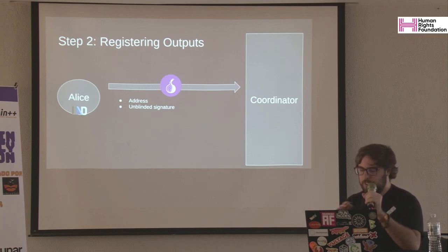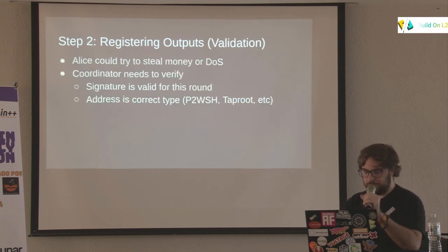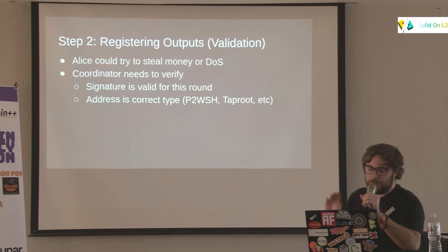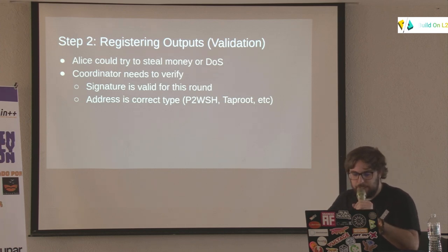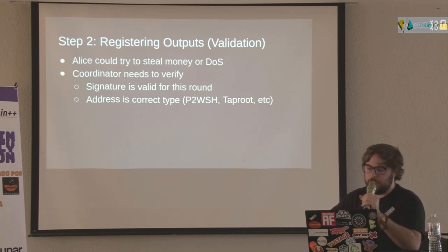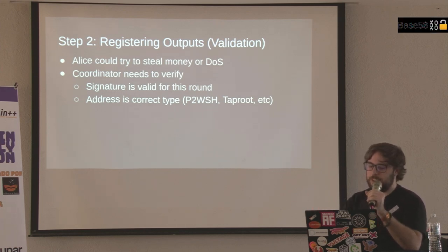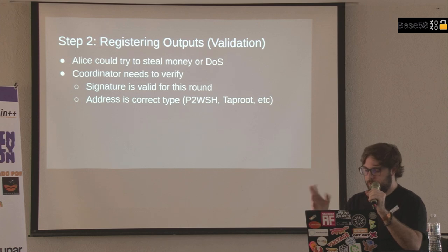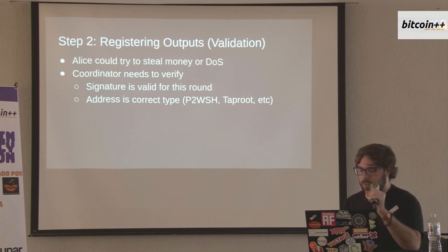This gives you a nice property where you don't really need to trust the coordinator with your privacy. They need to do some validation again — Alice could be trying to steal money or do a denial of service. They basically verify this is a signature they gave for this round, and that the address is the correct type, so for a taproot round they verify a taproot address was provided.